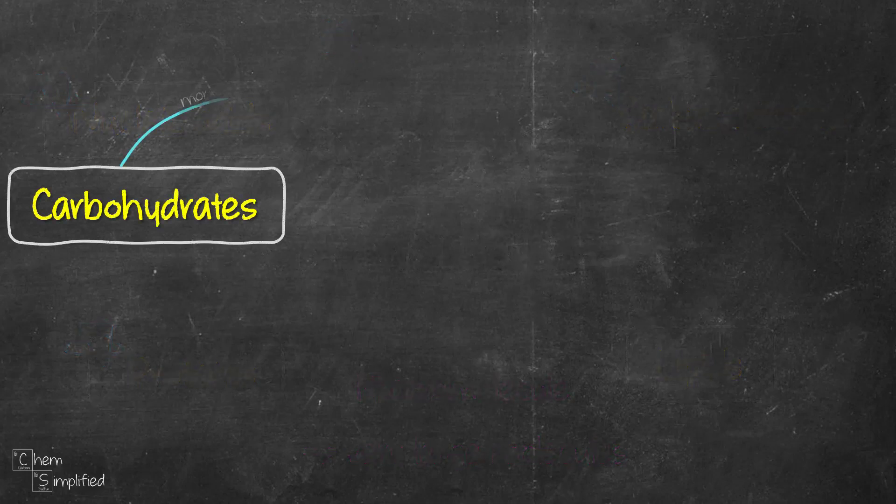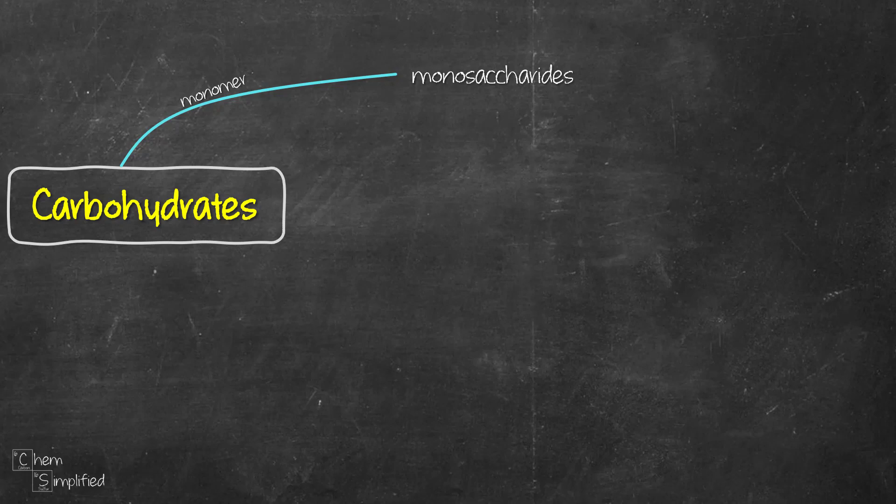Starting with carbohydrates, it's made up of monosaccharides as the building blocks. Carbohydrates can be classified as monosaccharides. Monosaccharides are made out of different number of carbons and the common ones are made up of six carbons like glucose, fructose, and galactose.